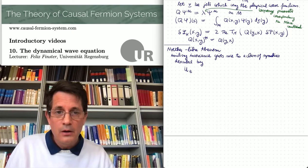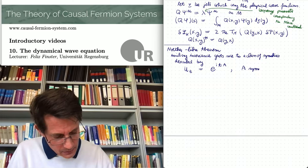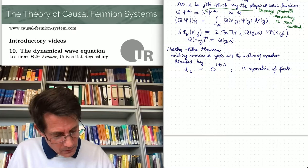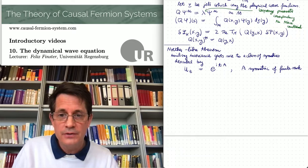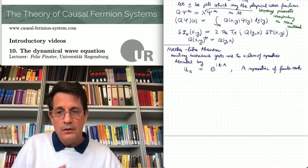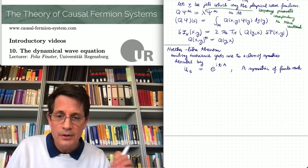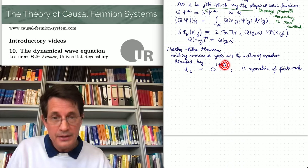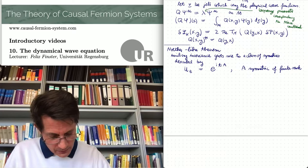We consider operators U_t defined by e^{i t A}, where A is a symmetric operator of finite rank. This U_t is a one-parameter family of unitary transformations acting as a symmetry group on the minimizing measure. To apply our Noether-like theorem, we consider the infinitesimal generator A and construct the corresponding vector field and jet. Specifically, we introduce an operator C of x by i times the commutator of A and x. Since the spacetime point is itself an operator, this commutator is well-defined, and C turns out to be a vector field on the space of operators.